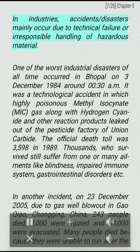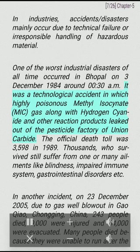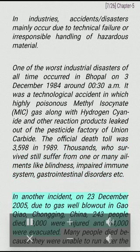In industries, accidents and disasters mainly occur due to technical failure or irresponsible handling of hazardous material. One of the worst industrial disasters occurred in Bhopal on 3 December 1984 at around 00:30 a.m. It was a technological accident in which highly poisonous methyl isocyanate (MIC) gas, along with hydrogen cyanide and other reaction products, leaked from the pesticide factory of Union Carbide. The official death toll was 3,598 in 1989. Thousands who survived still suffer from ailments like blindness, impaired immune system, and gastrointestinal disorders. In another incident, on 23 December 2005, due to a gas well blowout in Gaochao, Chongqing, China, 243 people died, 9,000 were injured, and 64,000 were evacuated.